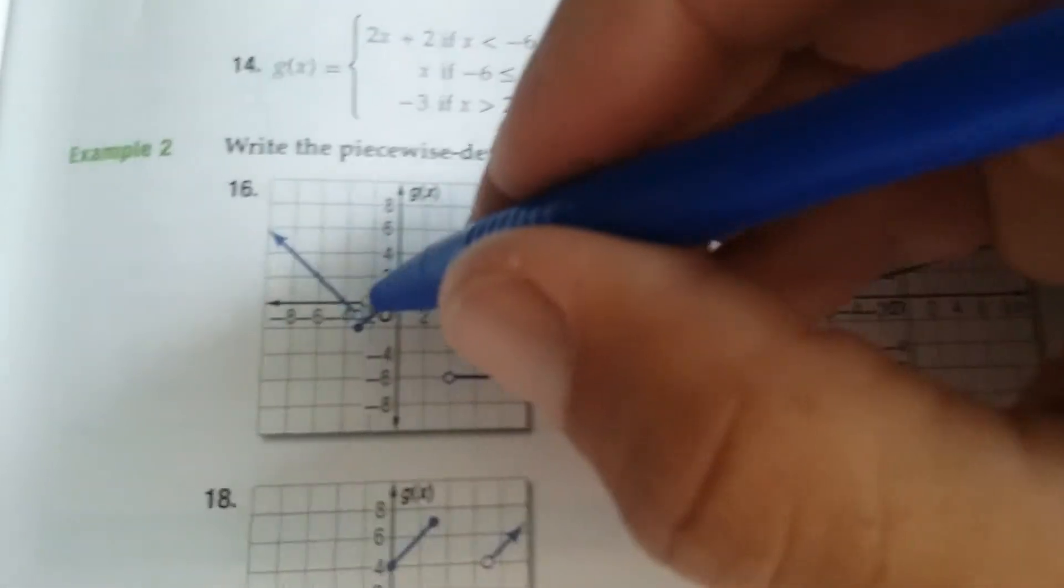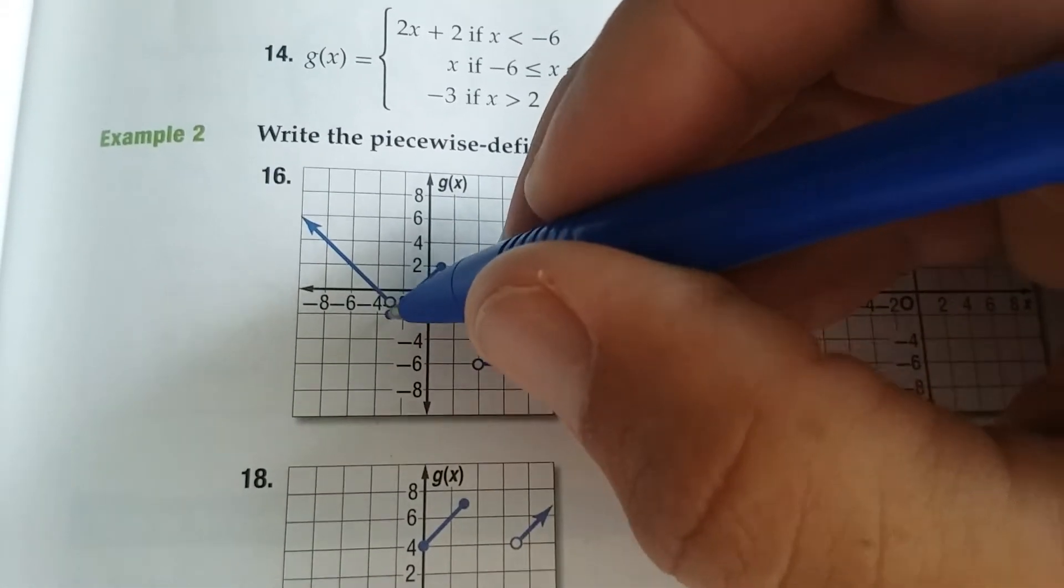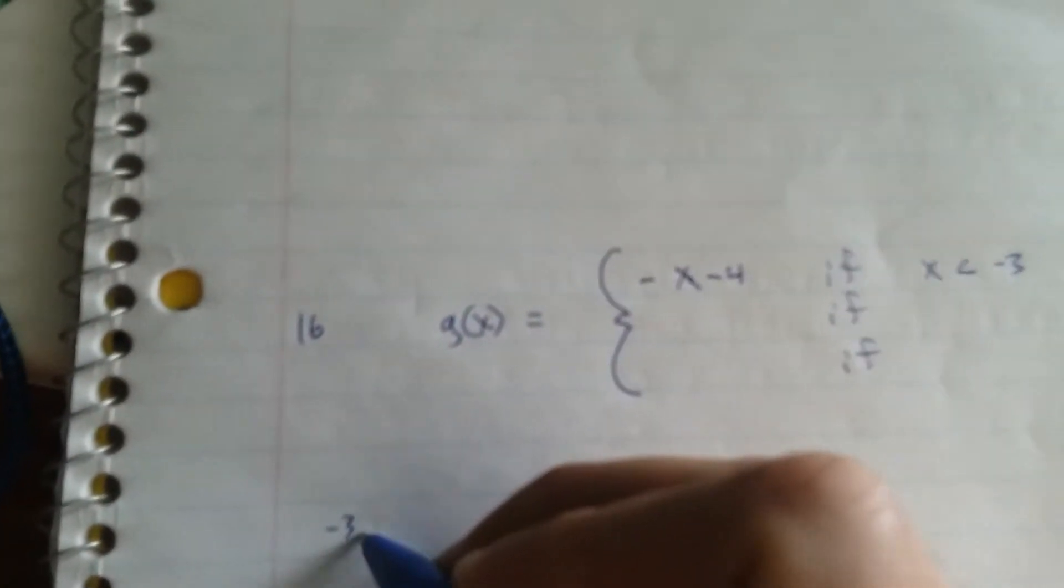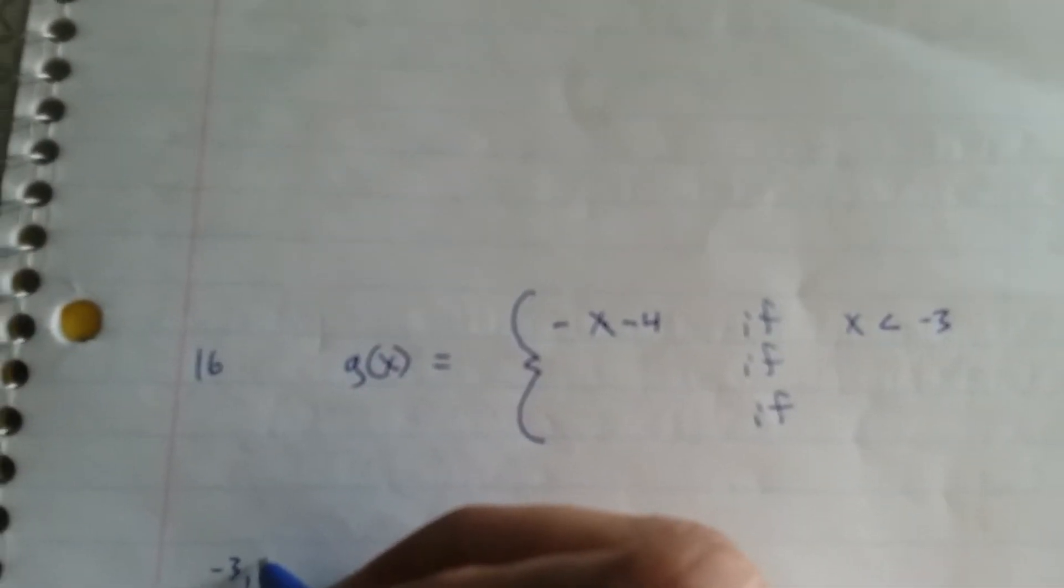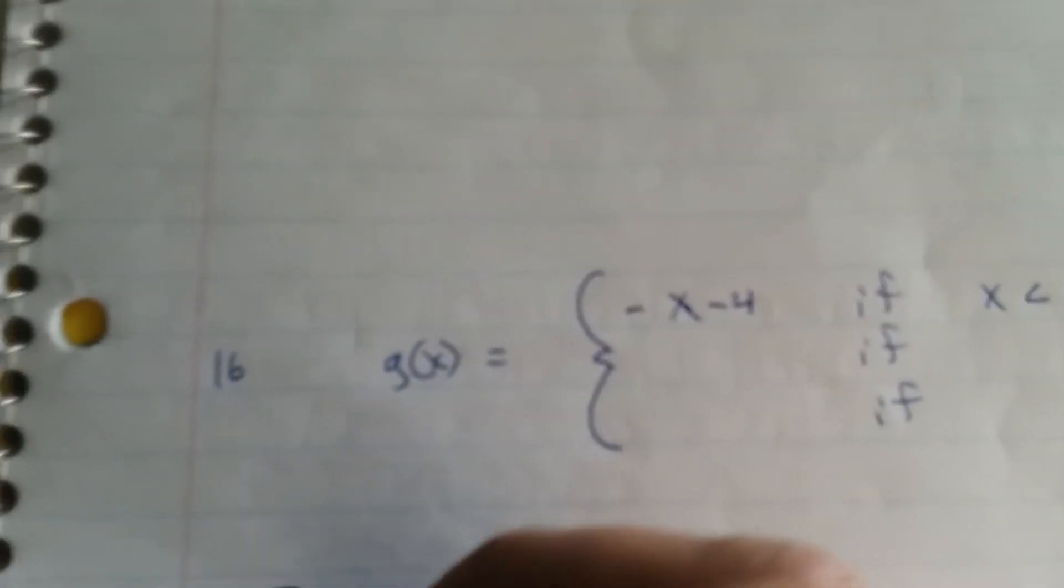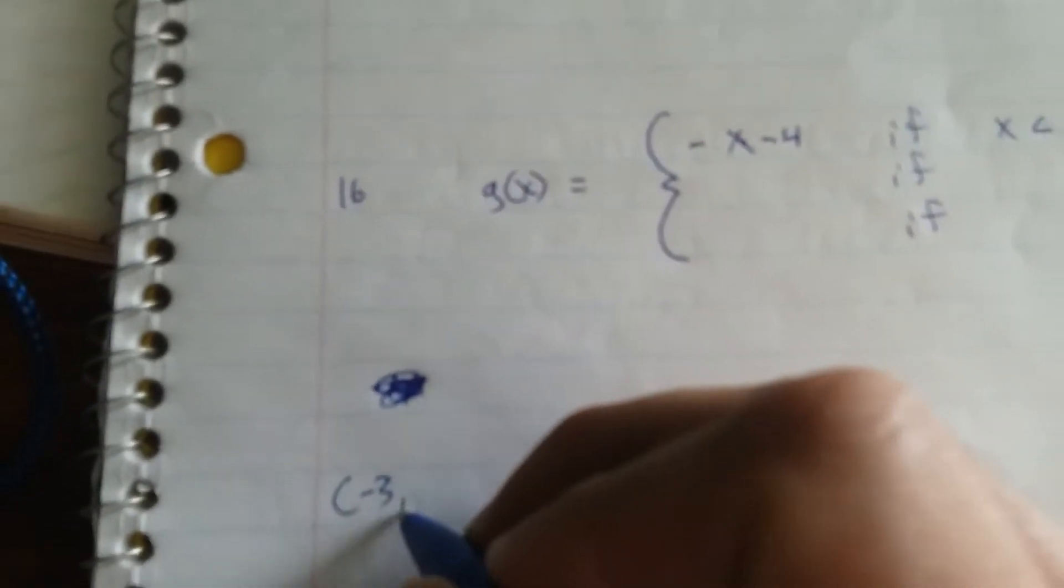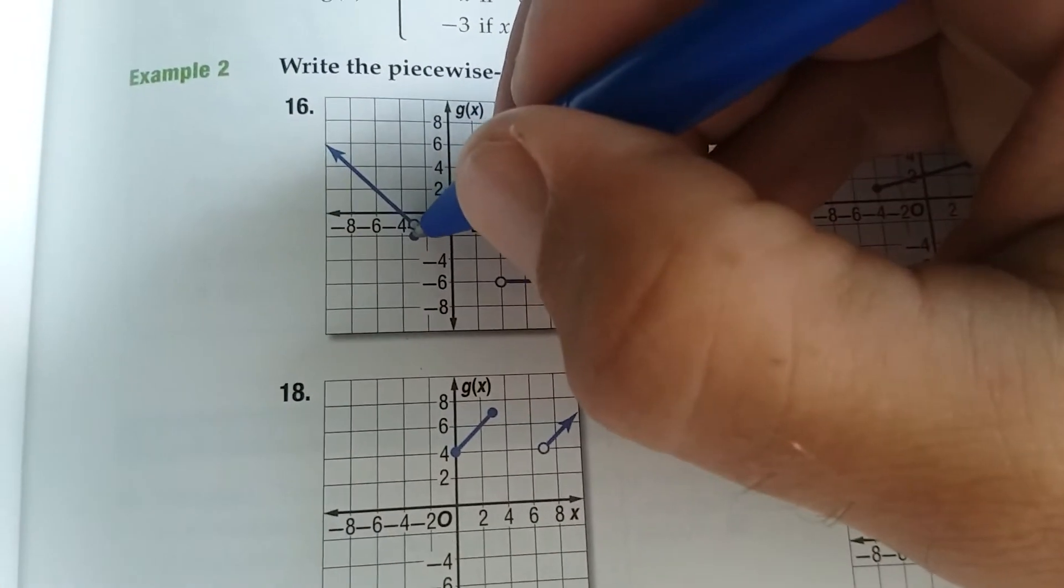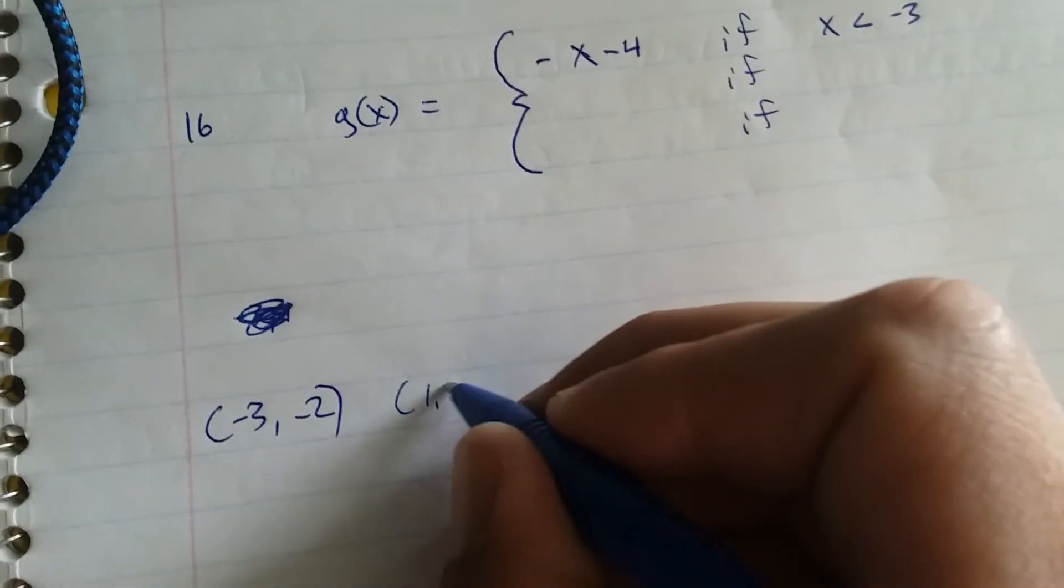Your next piece, your slope is, so this is at negative 3, 1, and this is 1, 2. So negative 3, 1, negative 3, negative 1. I'm sorry, negative 3, negative 2. This point is negative 3, negative 2. This point is 1, 2. To find your slope, 4 over 4 or 1.